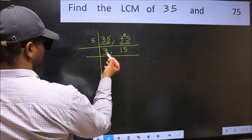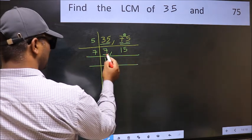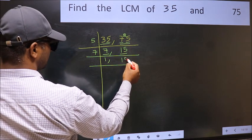Now here we have 7. 7 is a prime number. So 7 times 1 is 7. The other number 15 not divisible by 7. So you write it down as it is.